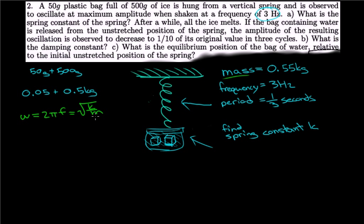So first, if we find the value, which is 2π frequency, that becomes 2π times 3, which equals 6π, which equals 18.8496.